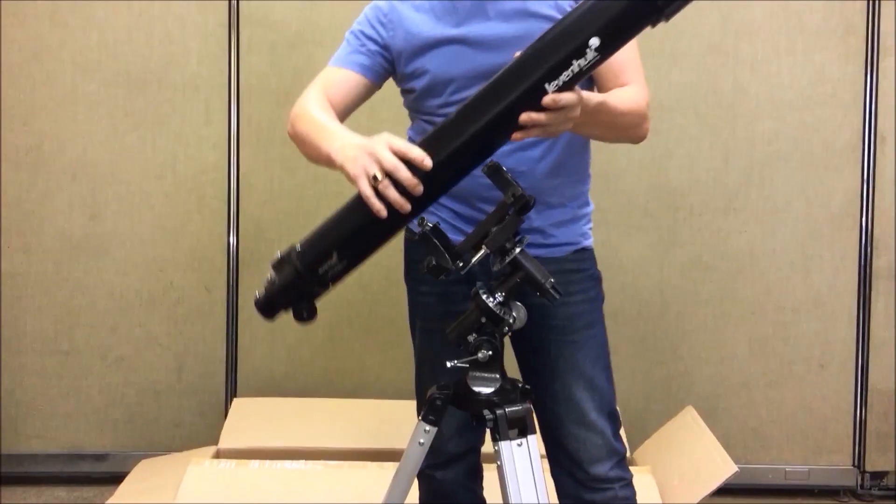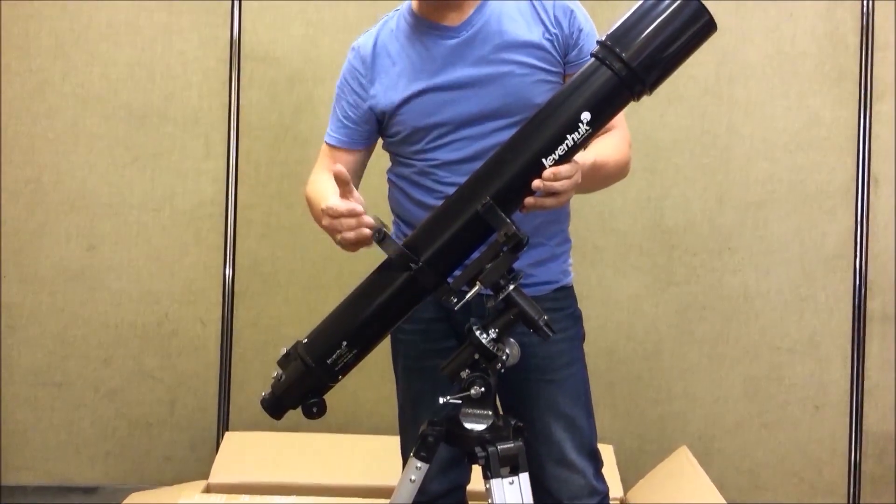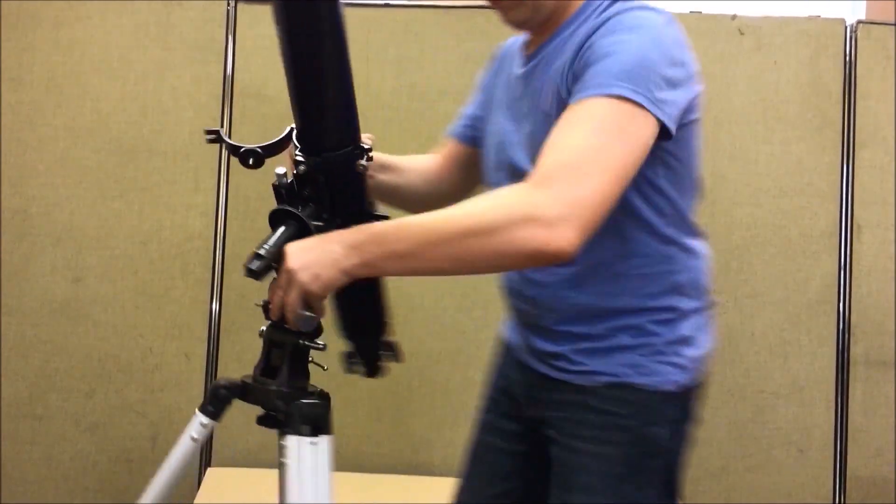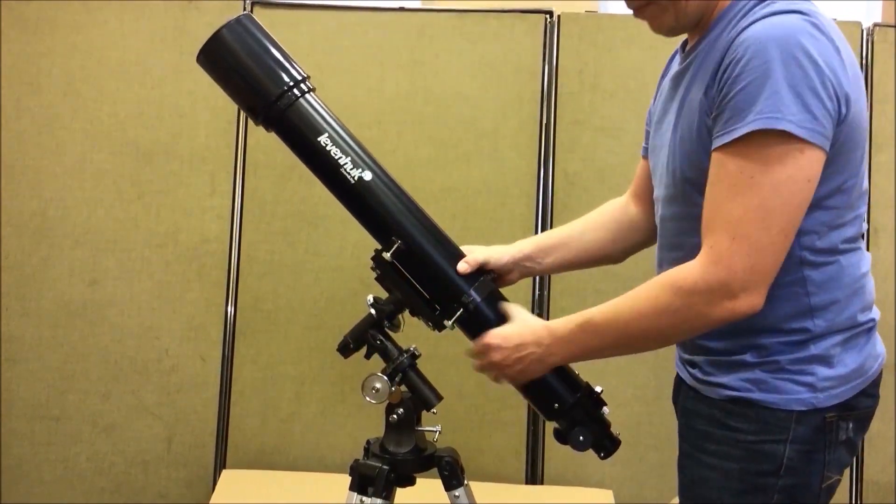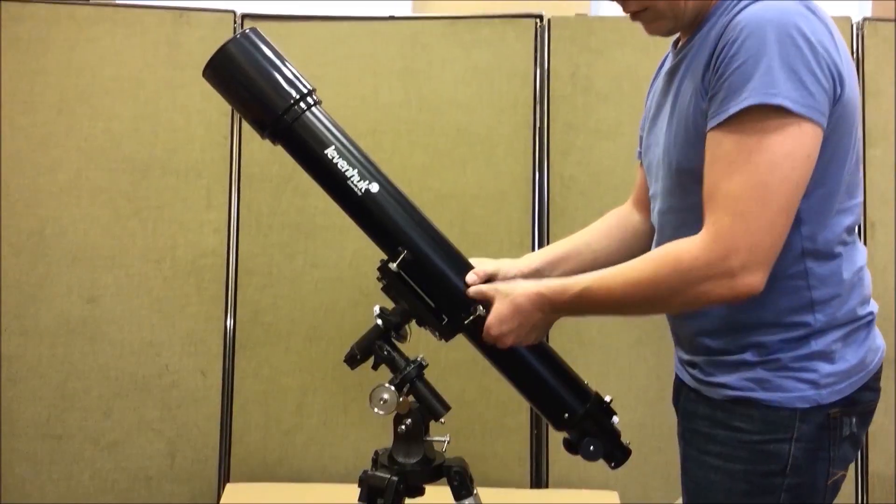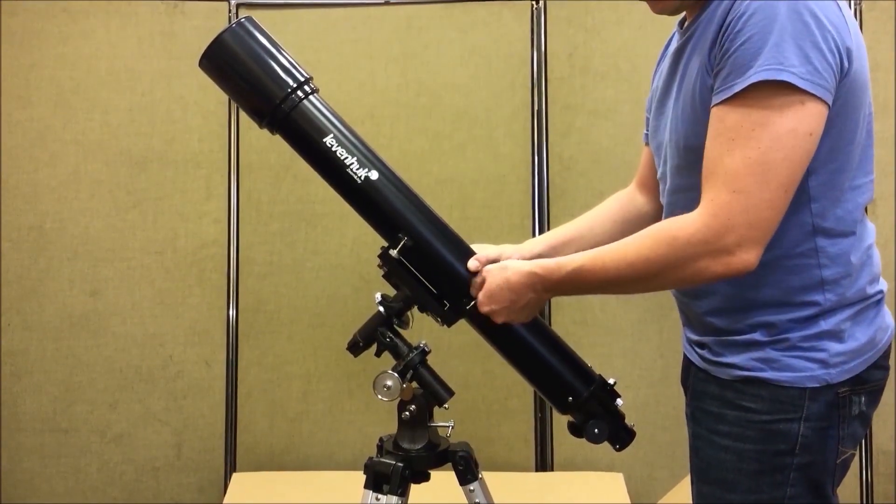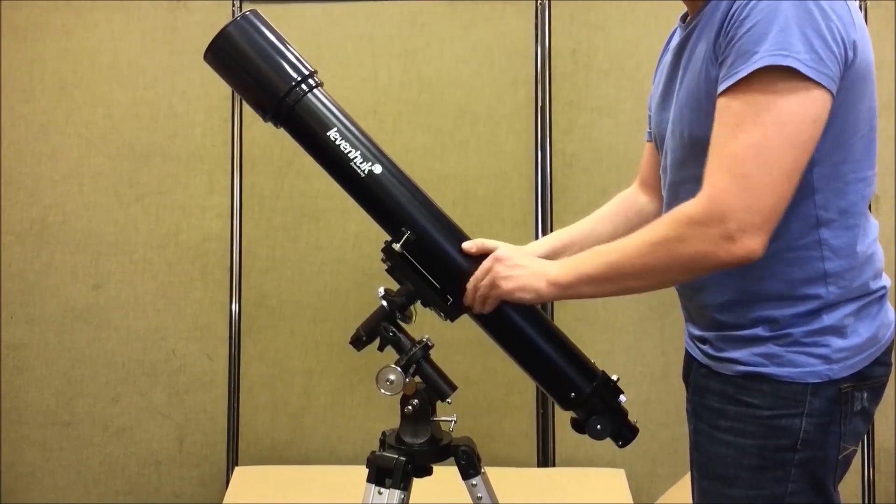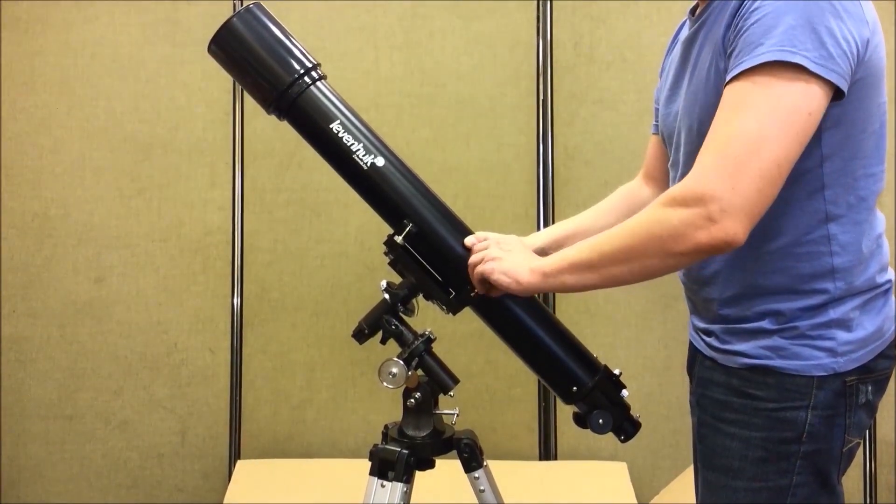Now we put the tube into the rings secured on the mount. Don't forget to hold the tube so it doesn't slip from the rings and fall down. Keep holding the tube when tightening the ring clamps. We don't need to worry about damaging the tube as the rings have soft pads on the inside.